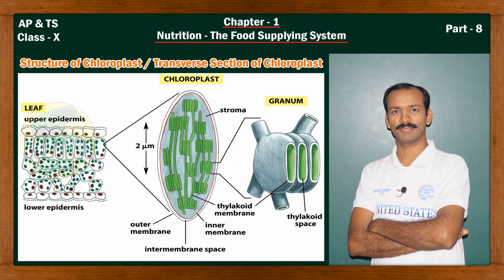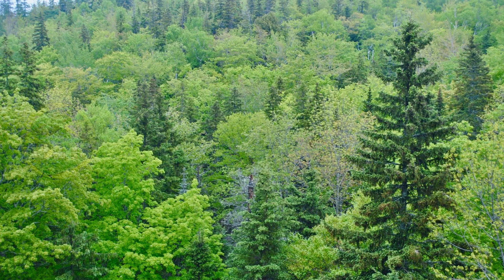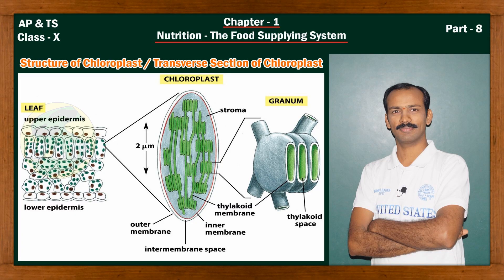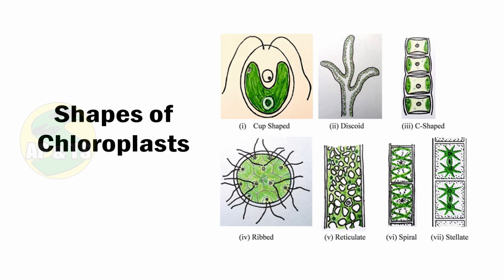In class 9, you have already studied about the chloroplasts. Let us see some more details about the chloroplast in class 10. Chloroplasts are one of the cell organelles found in cells of autotrophs like algae and plants. Their primary function is to help in the process of photosynthesis. They may be round, oval, filamentous, or discoid shaped in different types of autotrophs.